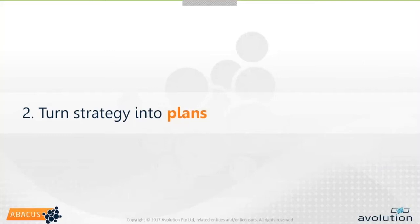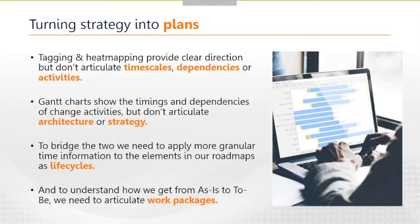As Tim alluded to, heat mapping gives you the 'what' — it tells you basically what your strategic intent is. But it doesn't provide any view of time scales, dependencies, or activities. In the classic sense, that's what something like a Gantt chart does — a Gantt chart will show you those tasks and dependencies. The flip side is a Gantt chart doesn't give you any view of the architecture. So we need a bridging artefact that can represent our architecture in more of a plan-based view, and there are a couple of ways we can do this.